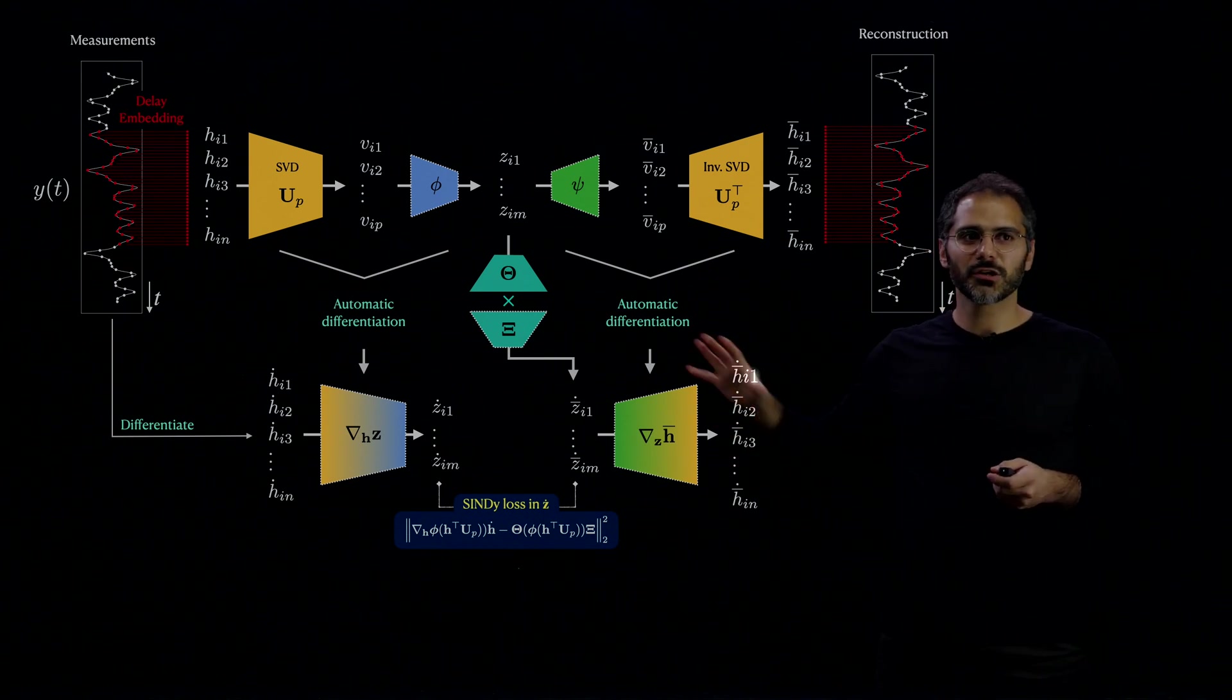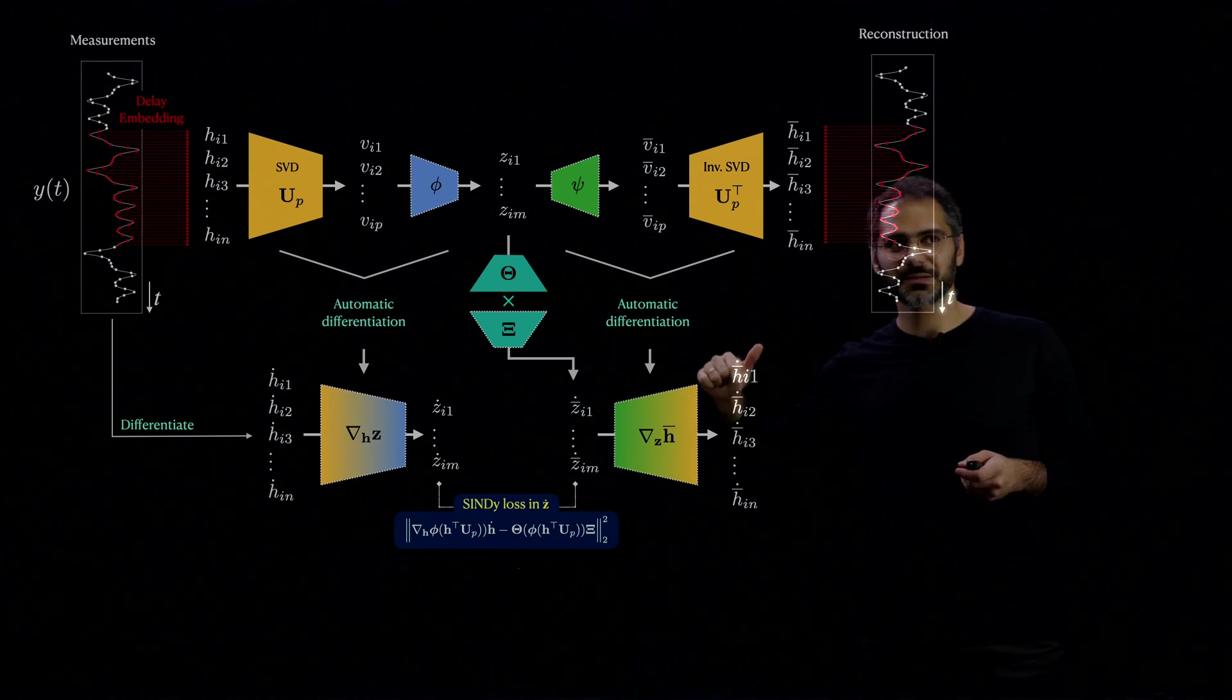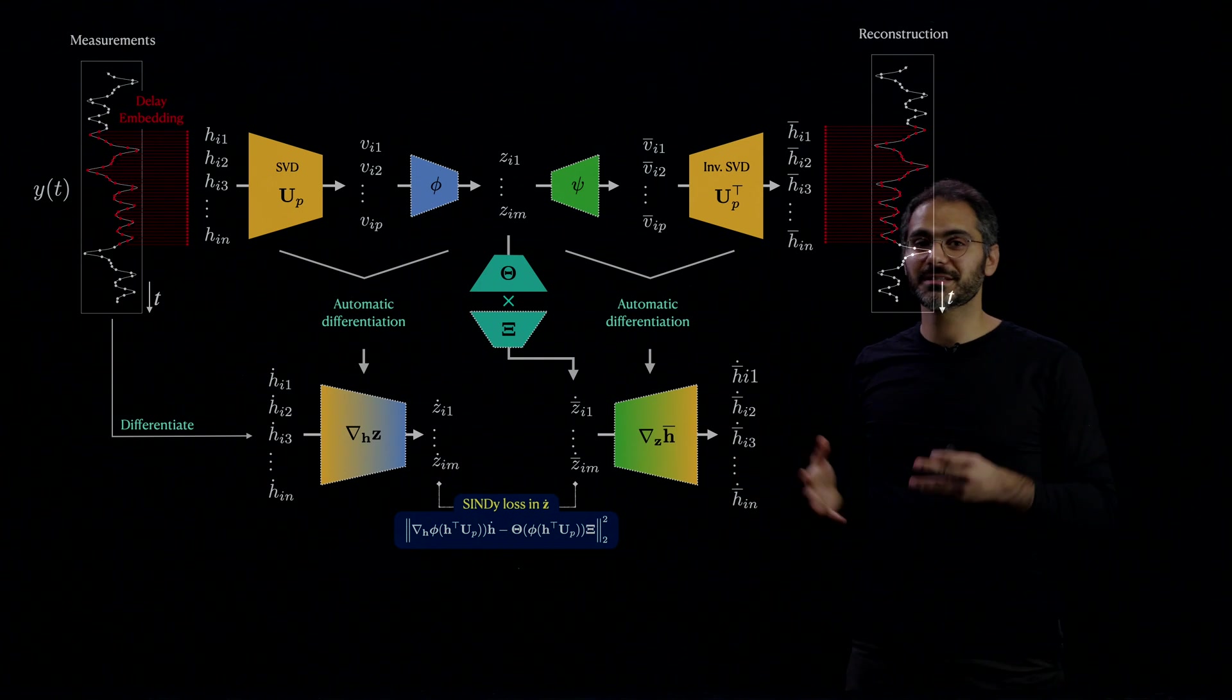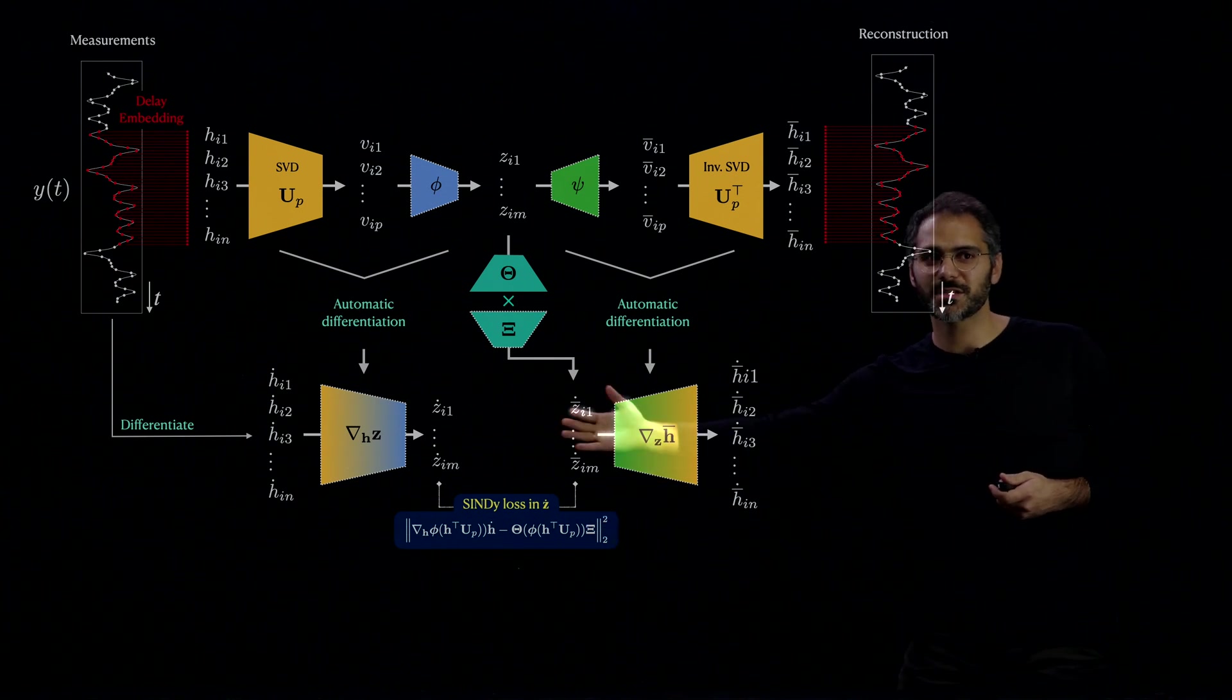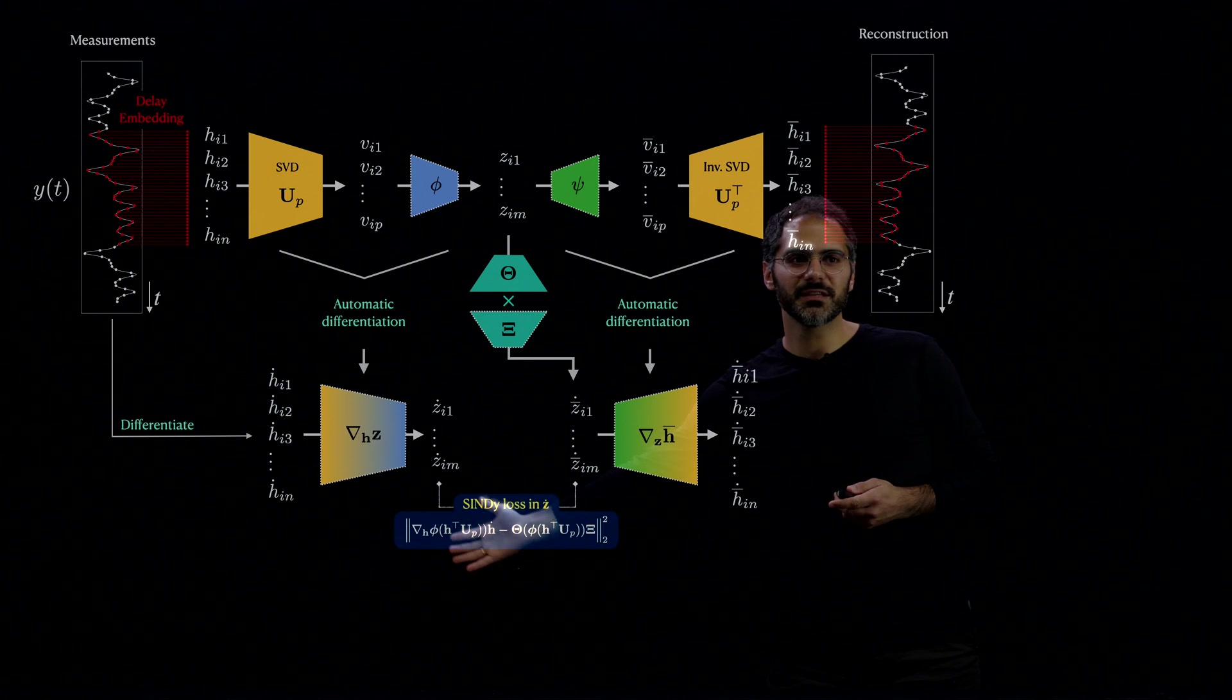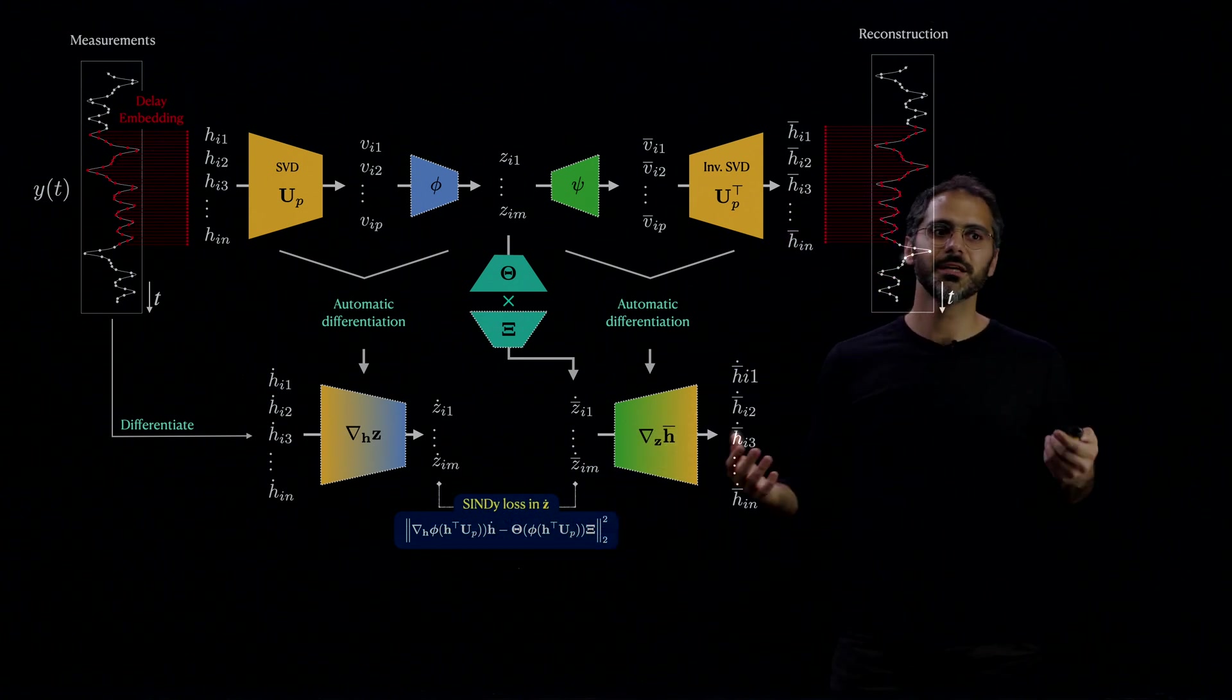And you can notice that there are a lot of redundancies. There's z-dot, z-bar-dot, h-dot, h-bar-dot, and h-bar and h. So we want all of these to be the same. We don't want the redundancies. So this is what defines our loss functions. First, we minimize the difference between z-dot and z-bar-dot. And you can derive these as a function of the input H and the functions φ, C, and ψ.